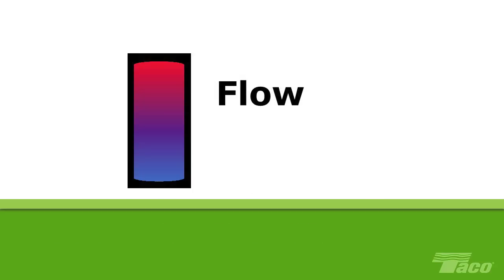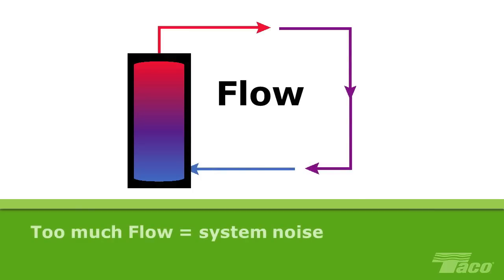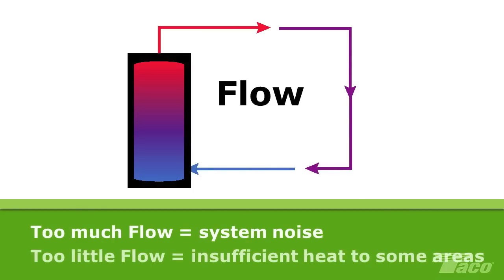Flow, measured in gallons per minute, is the rate at which water must be moved to carry heat throughout a hydronic system. Too much flow results in system noise. Too little flow means insufficient heat will reach at least some areas of the building.